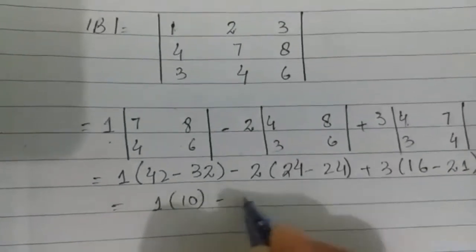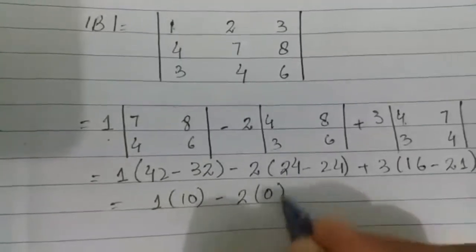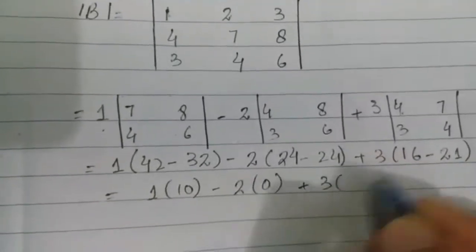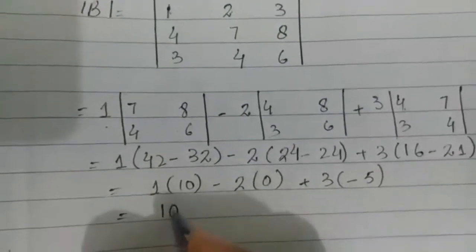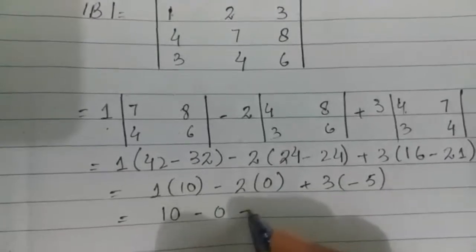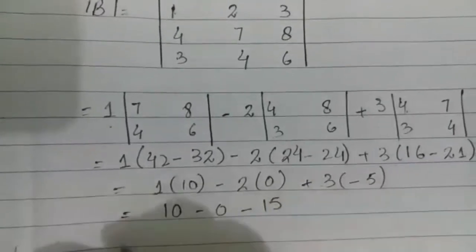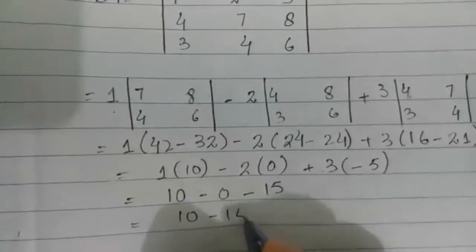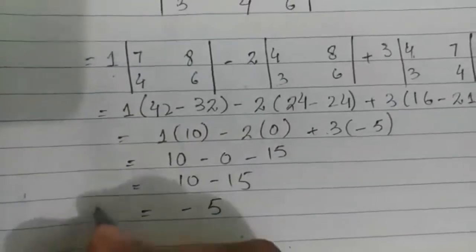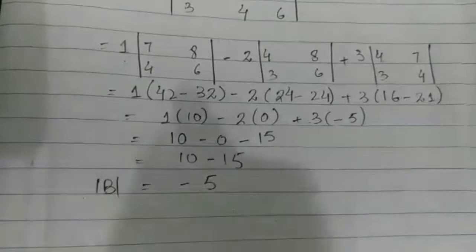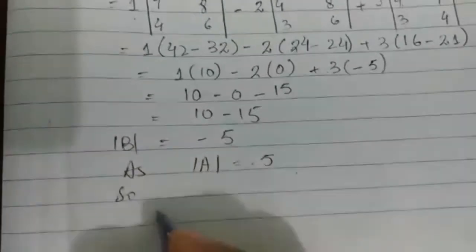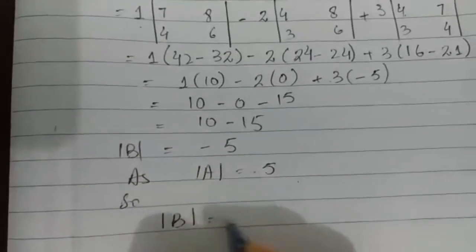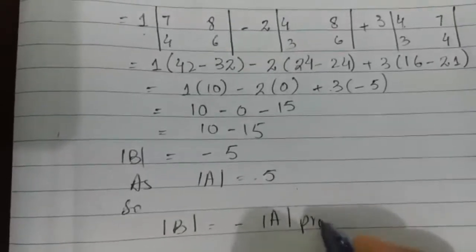Combining: 1×(10) − 2×(0) + 3×(−5) = 10 − 0 − 15 = −5. Therefore determinant of B equals −5. Since determinant of A equals positive 5, we have determinant of B equals negative determinant of A. This is proved.